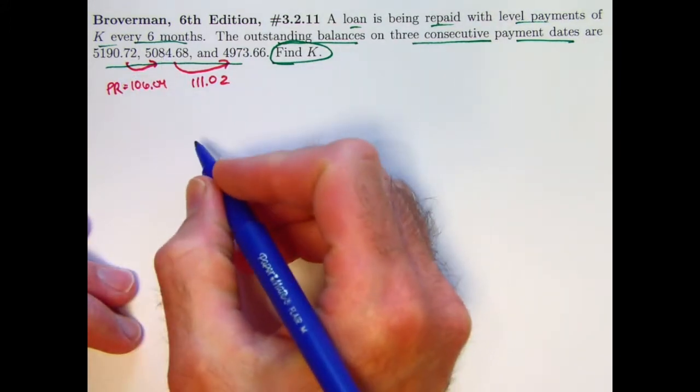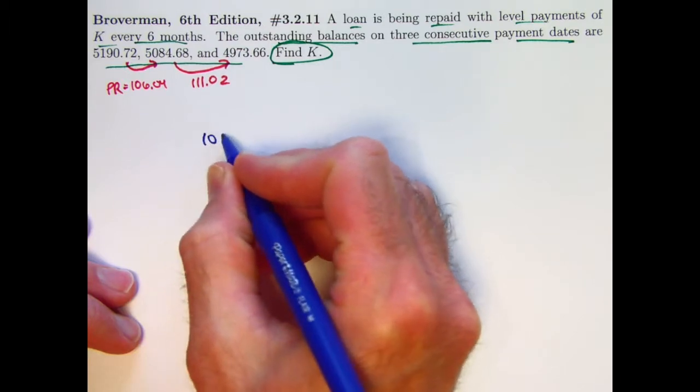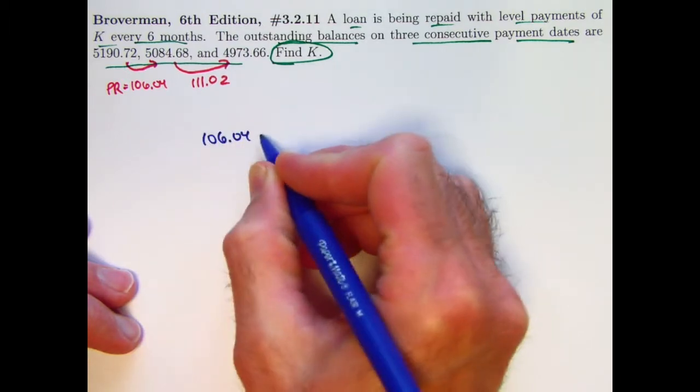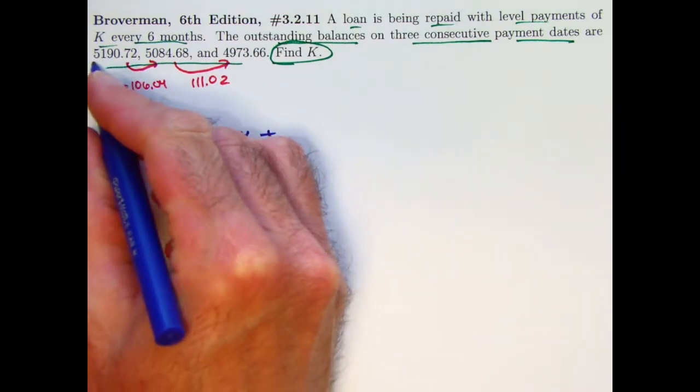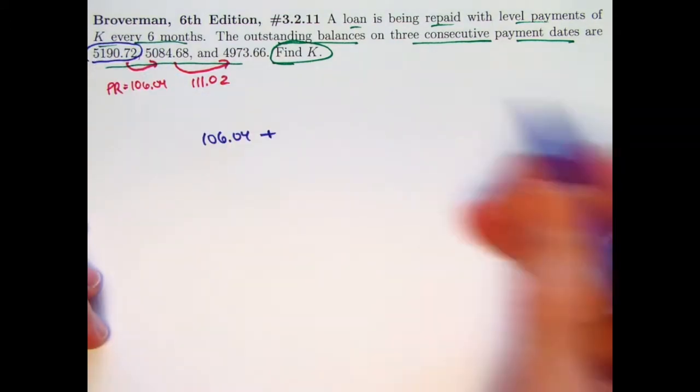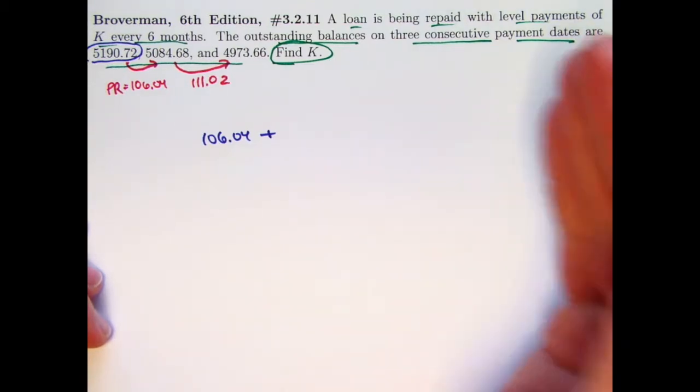So in the first case, the principal reduction component is 106.04, and what's the component from interest? It would be the outstanding balance at the beginning times the interest rate, which would be a six-month interest rate, but again, that's not really important.